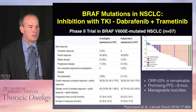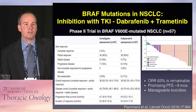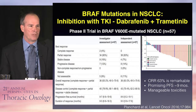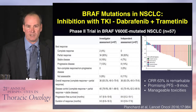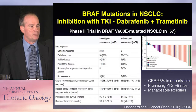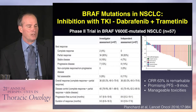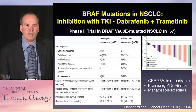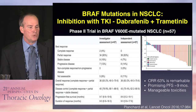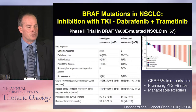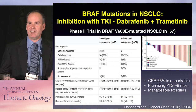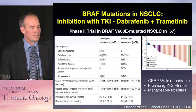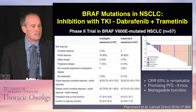Even more exciting is combination therapy with dabrafenib and trametinib — a BRAF inhibitor plus a MEK inhibitor. Extrapolating from melanoma data, the combination showed improved responses and survival in BRAF-mutated melanoma. In a phase II trial of 57 previously treated patients with BRAF V600E mutated non-small cell lung cancer, we see an overall response rate of 63%, with two patients achieving a confirmed complete response. Progression-free survival was about nine months with manageable toxicities. Interestingly, when you combine dabrafenib and trametinib, the toxicities are actually less than dabrafenib alone, at least from the melanoma data.